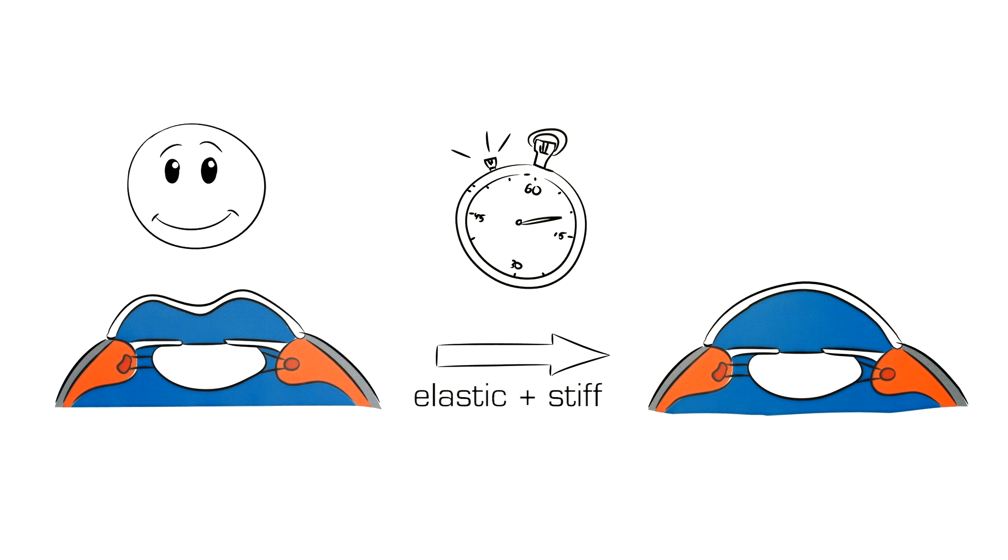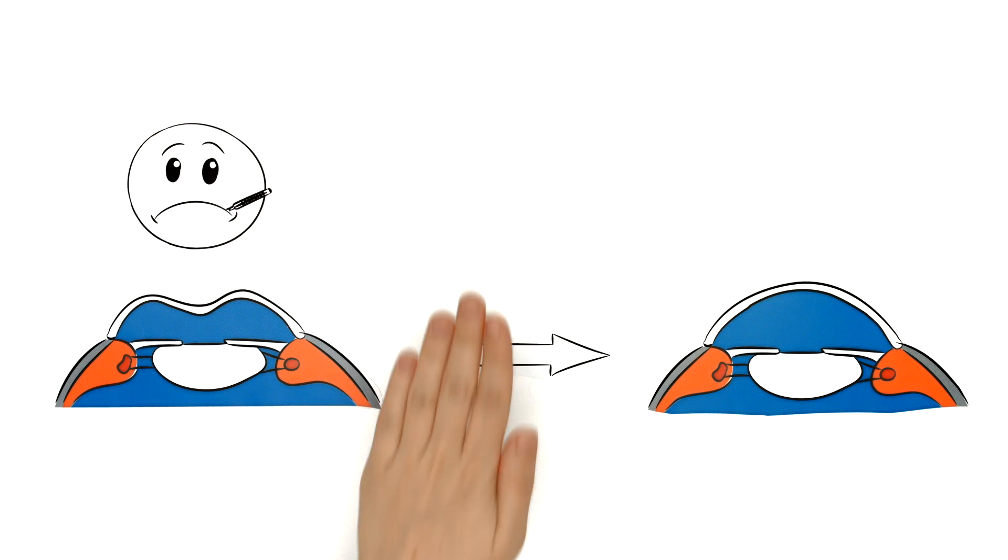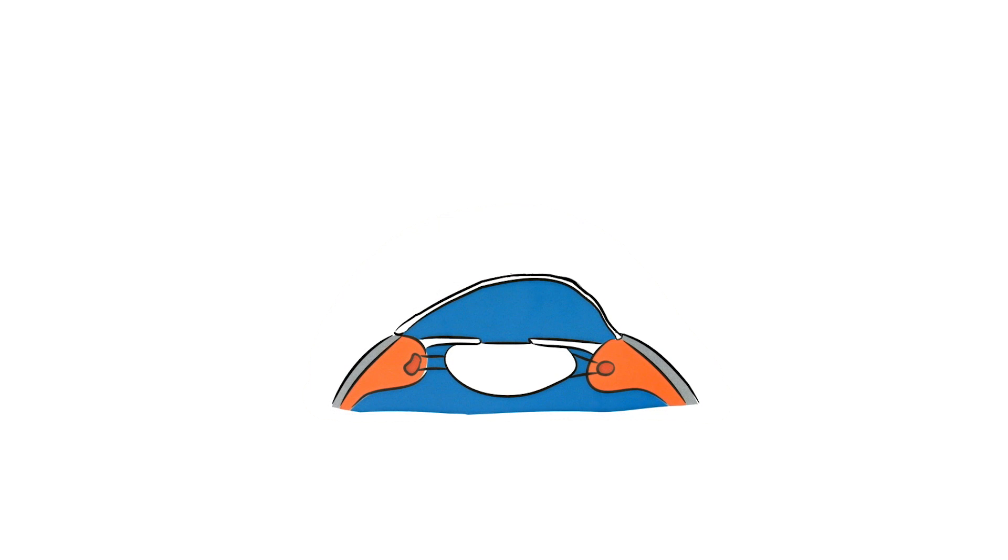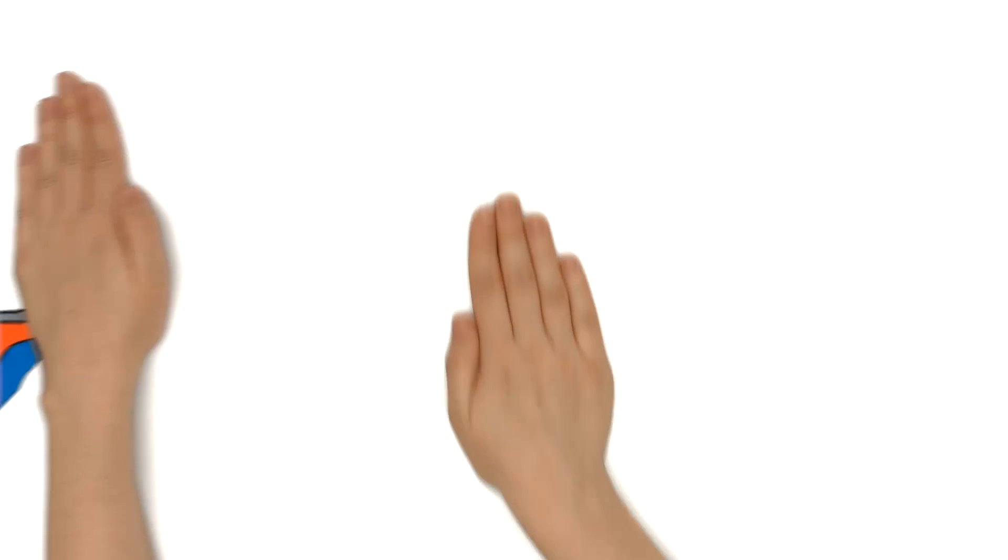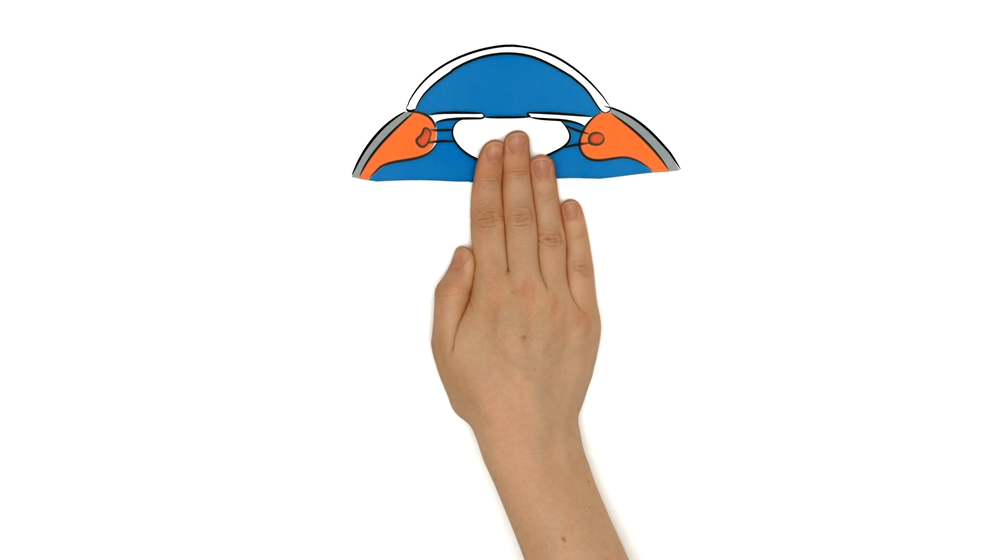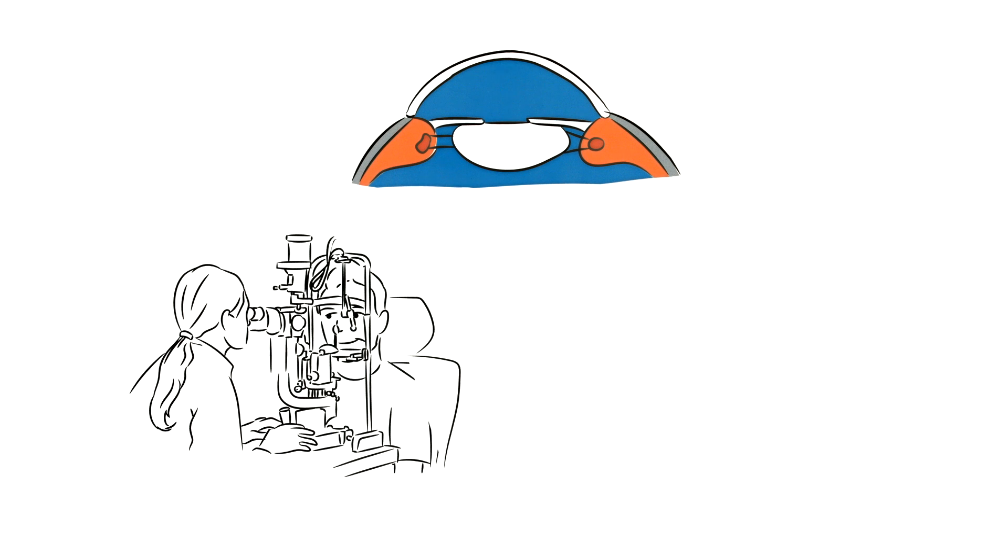It's elastic and stiff. In the case of an ectatic cornea, the biomechanical properties are changed. This leads to increased thinning and bulging of the cornea. For example, laser surgery could cause ectasia. The elasticity and stiffness of the cornea therefore have a lot of importance in ophthalmology.